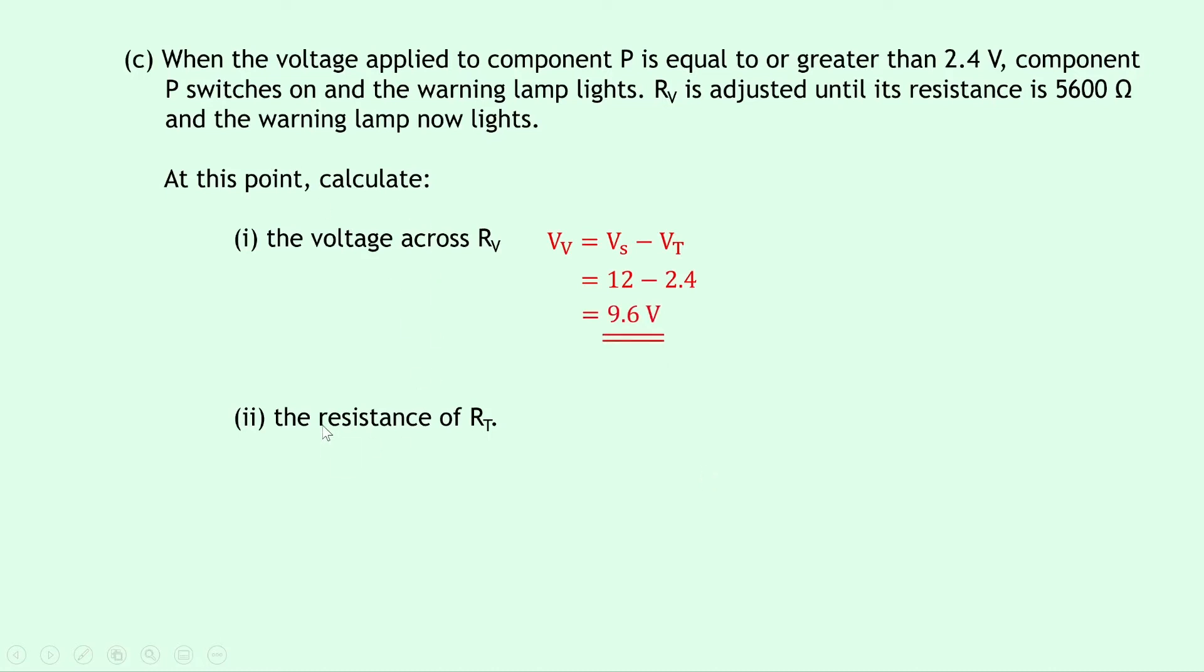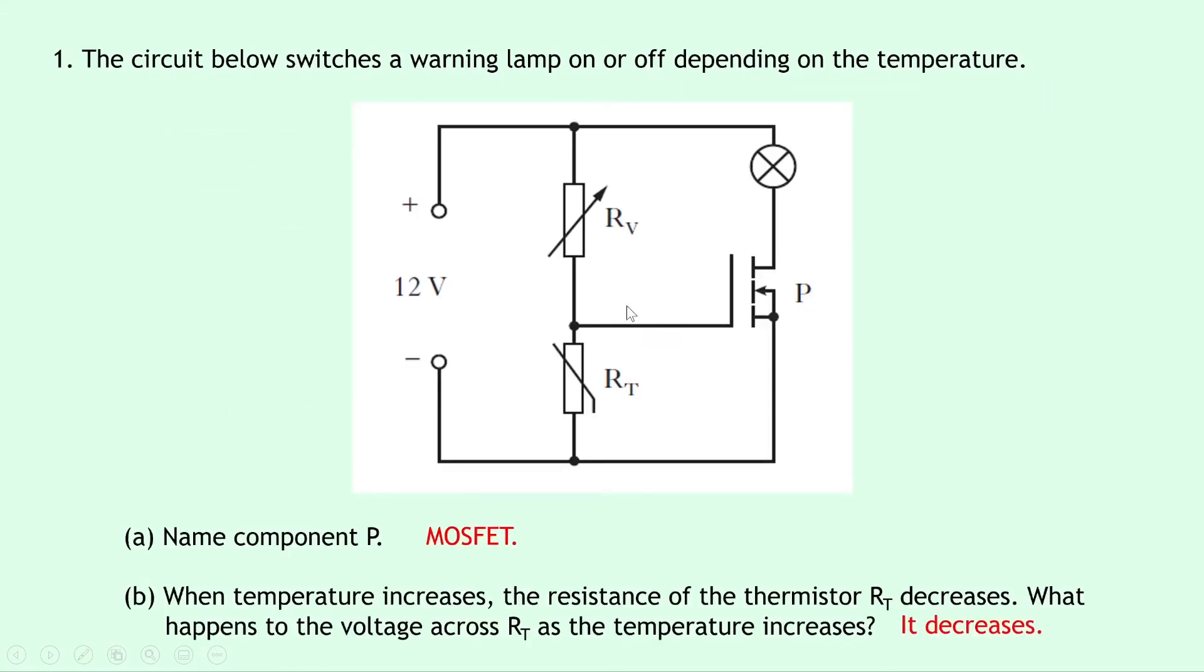Part two says at this point to calculate the resistance of RT, so the resistance of the thermistor. Now if we look back at the circuit diagram, notice that we've got two voltages and one resistance value so far, and we've got one unknown resistance value. So right now we know that at the point that the lamp lights, the voltage across the thermistor is 2.4 volts and the voltage across the variable resistor is 9.6 volts. We also know that RV has been adjusted until it's at a resistance of 5600 ohms. So this means we know two voltages and a resistance value, so we can actually use the potential divider formula for when the supply voltage is not known, because we don't actually need it here.